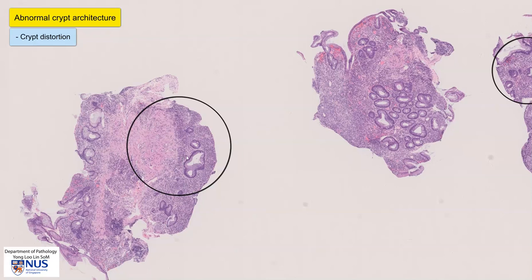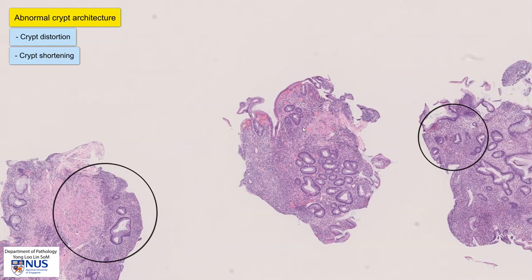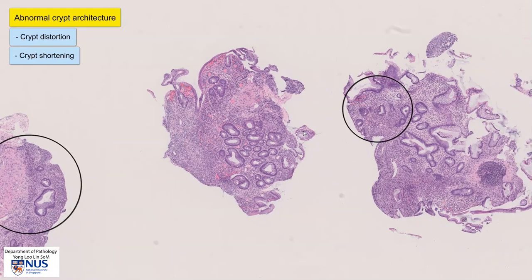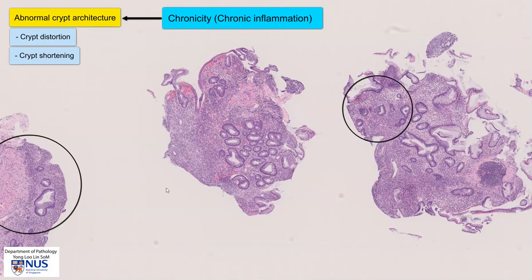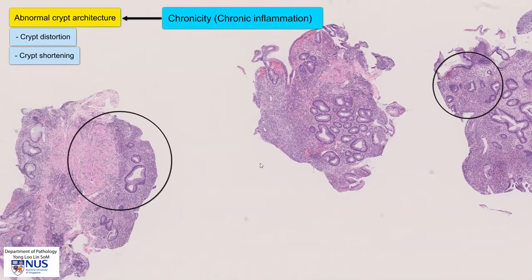If you look in this area, this is the base of the mucosa and this is the thickness of the mucosa. We can see that there is shortening of the crypts, meaning that the crypts do not reach right to the base of the mucosa as they should. Here again, there is a suggestion of shortening of the crypts. This disruption in crypt architecture is a feature of chronicity or chronic inflammation in the colon.